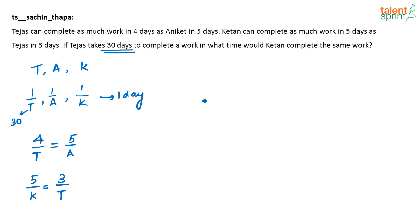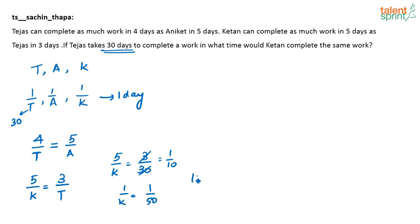The question asks: in what time would Ketan complete the same work? Substituting T = 30: 5/K = 3/30 = 1/10. So 1/K = 1/50, meaning Ketan completes 1/50th of the work in 1 day. Therefore Ketan will complete the same work in 50 days — the work that Tejas completes in 30 days, Ketan will finish in 50 days.